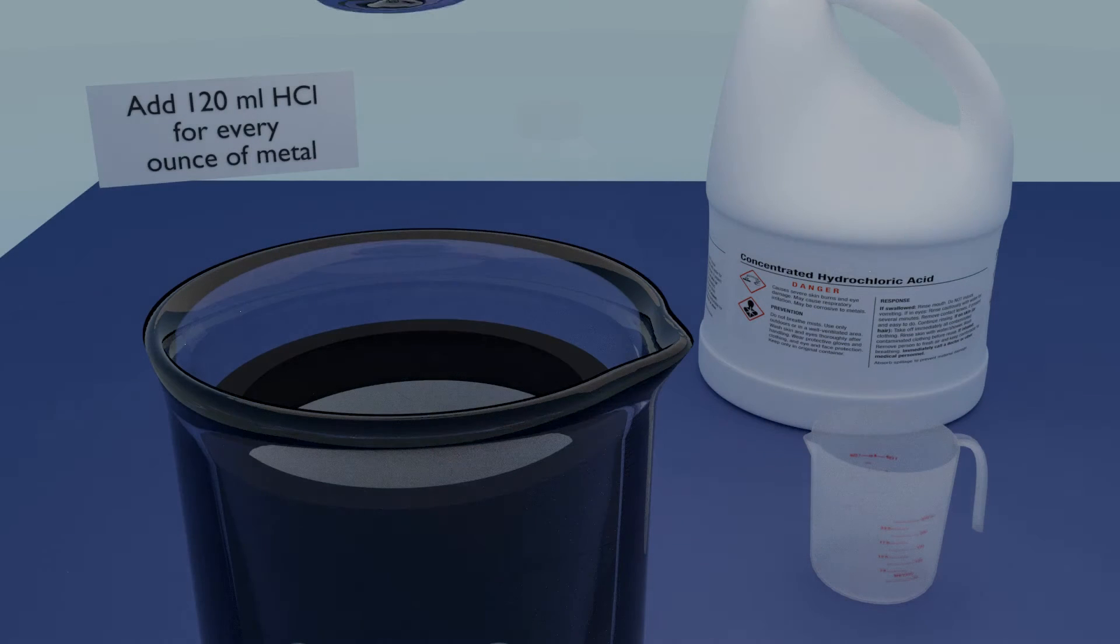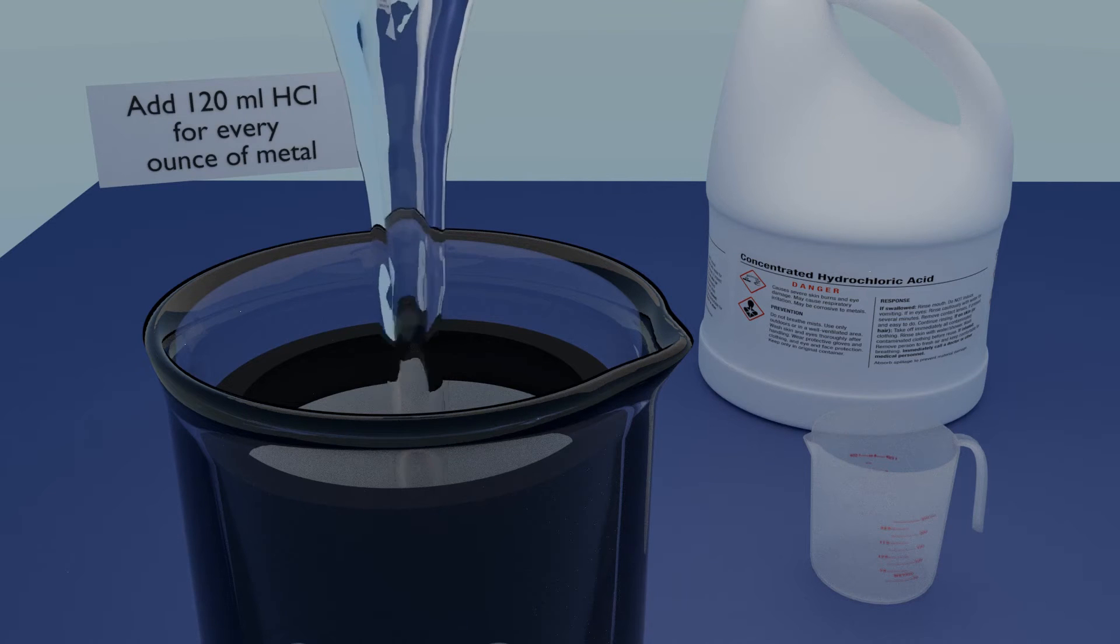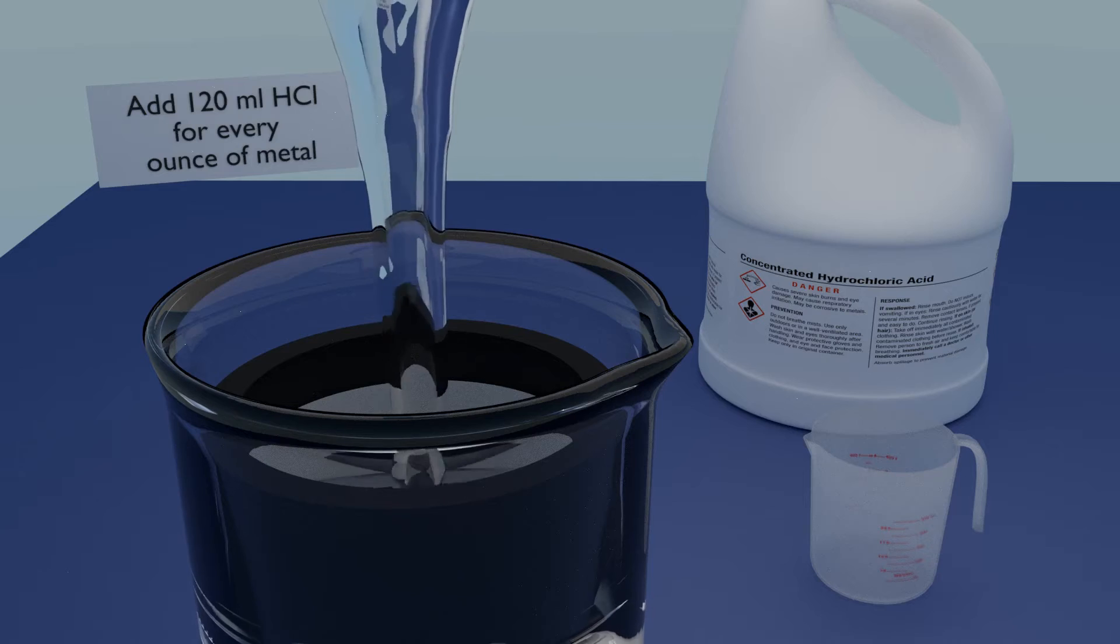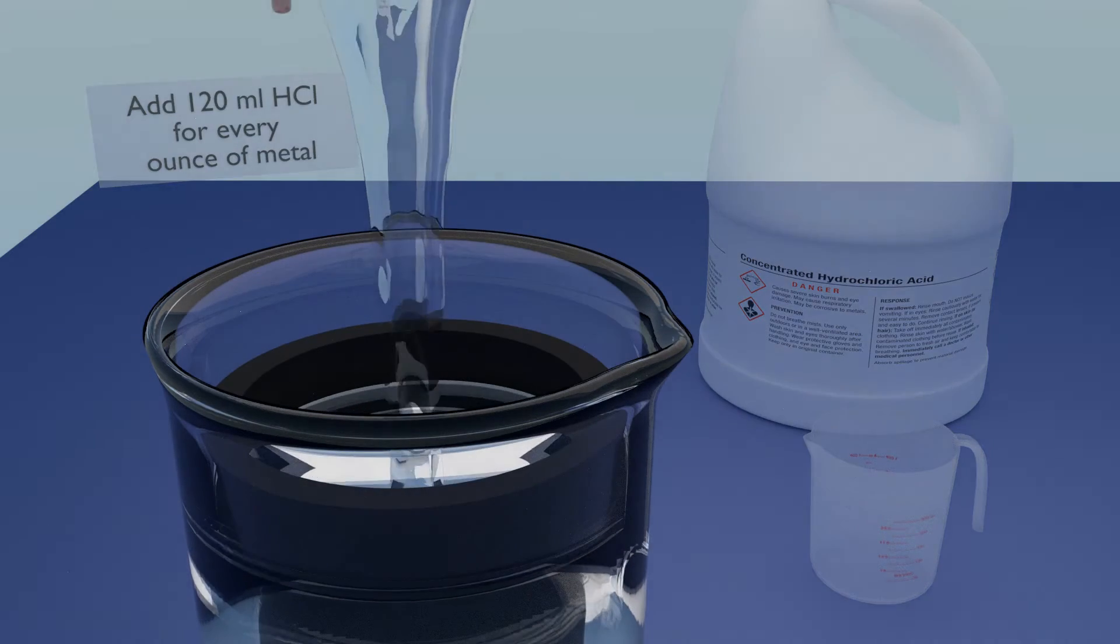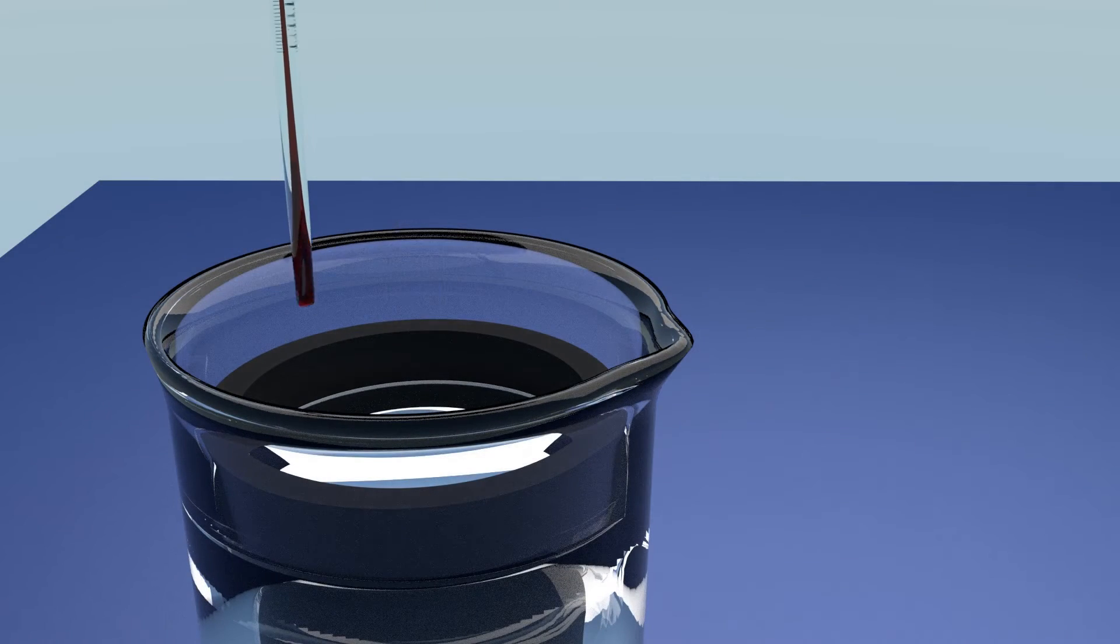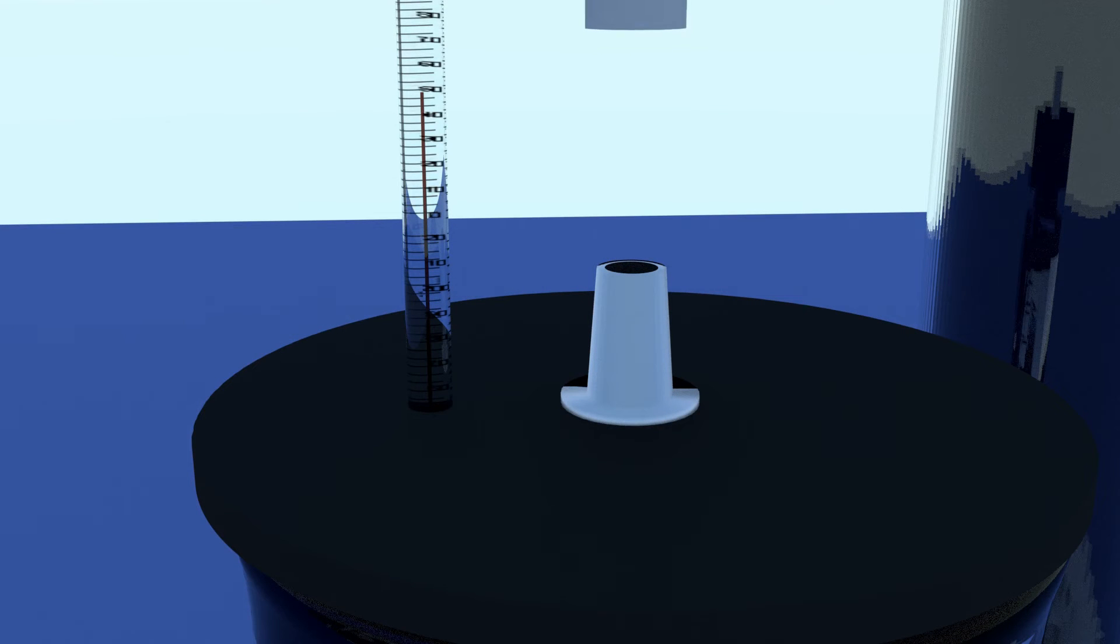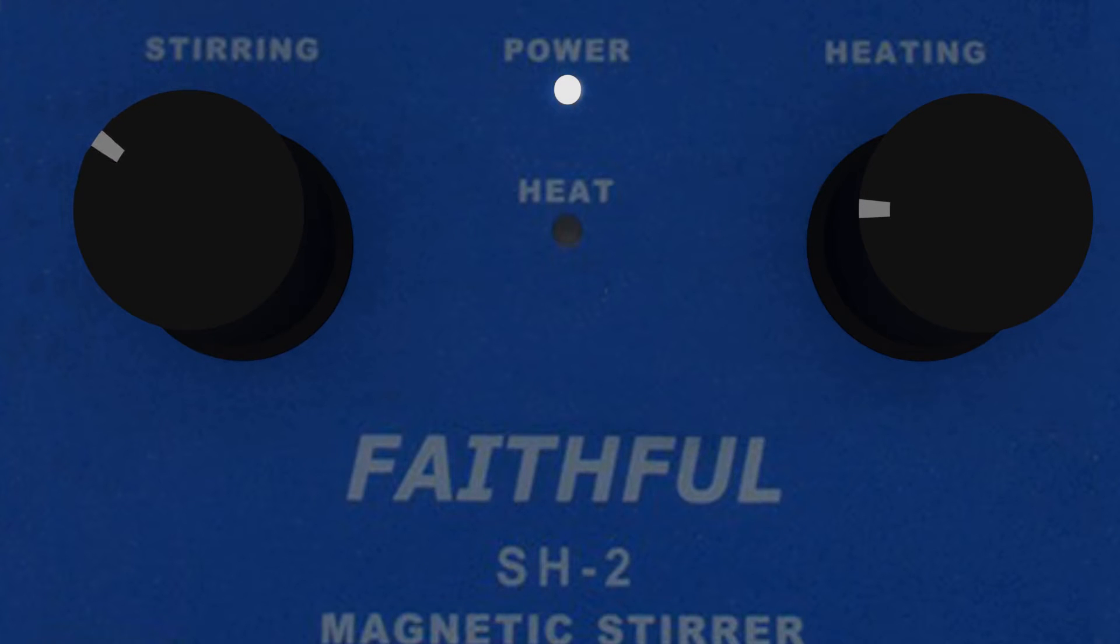Take the beaker to a well ventilated area, preferably outdoors. Add 120ml of hydrochloric acid for each ounce of metal. Replace the cap and bring back indoors. Connect the quick connects. The fumes will now pass through the scrubber, removing both their smell and corrosion. Turn on the magnetic stirrer and then slowly increase the speed to about a quarter setting.